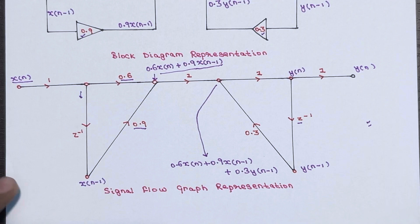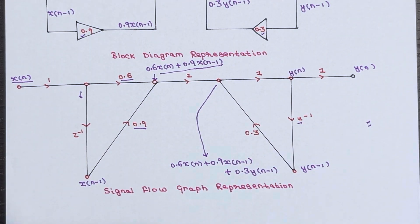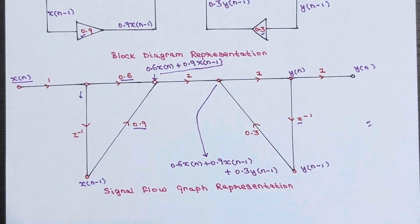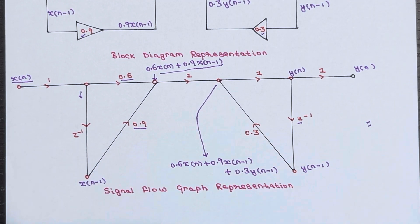To understand these elements separately, there is a dedicated lecture explaining the block diagram and signal flow graph representation for the adder, unit delay element, unit advance element, and constant multiplier — watch that video first for better understanding. Thanks for watching. If you have any doubt please ask in the comment section, and don't forget to subscribe to our YouTube channel.